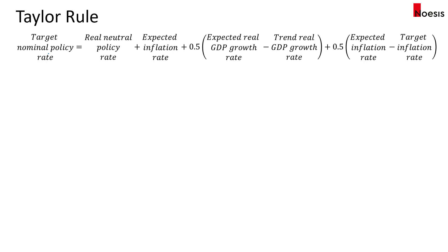In the Taylor Rule, the target nominal policy rate equals the real neutral policy rate plus the expected inflation rate, plus 0.5 multiplied by the expected real GDP growth rate minus the trend real GDP growth rate, plus 0.5 times the expected inflation rate minus the target inflation rate.